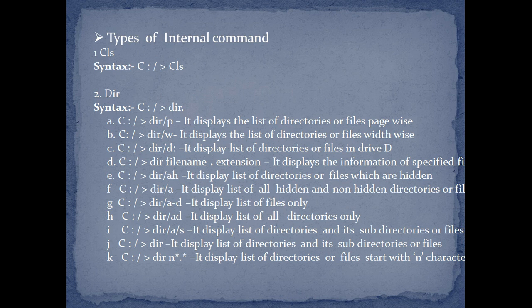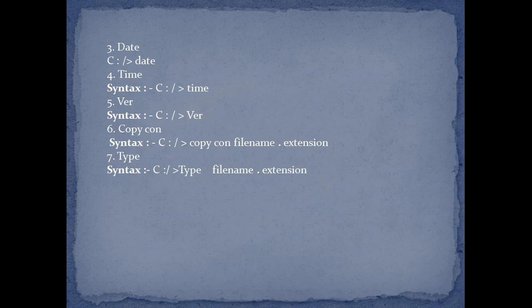The first type is CLS — CLS is a clear screen command which is used for clearing the screen. The second one is DIR — DIR is a command for listing all the directories and files placed in a directory. The third one is the date command — date command is used for modifying or changing the date.